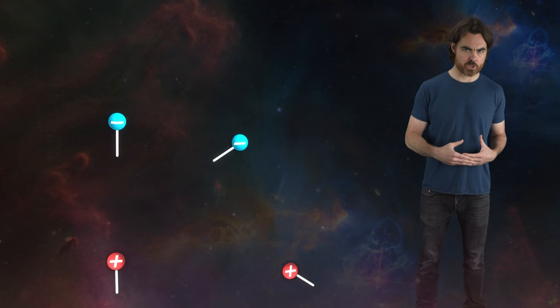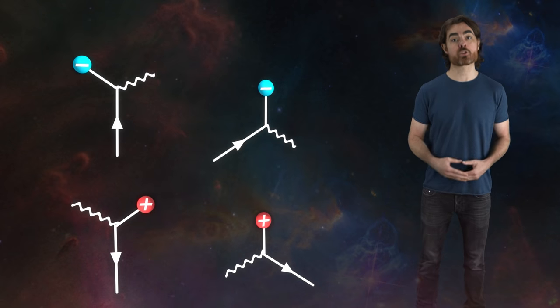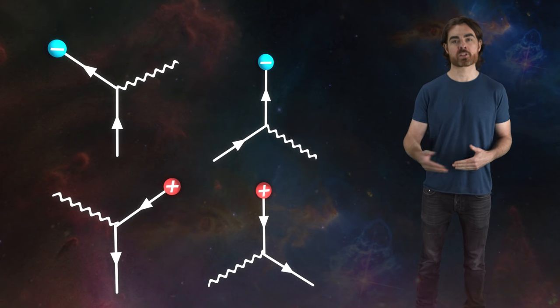But why only this interaction? Well, because of conservation laws. Energy and momentum conservation requires that particles not just vanish or appear from nothing, which guarantees that if something goes in, then something else must come out. Charge must also be conserved. If one electron or positron goes in, then one electron or positron, respectively, must leave.